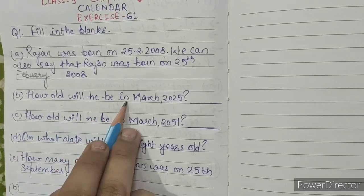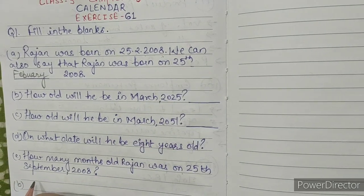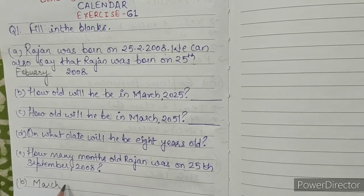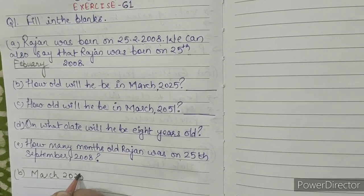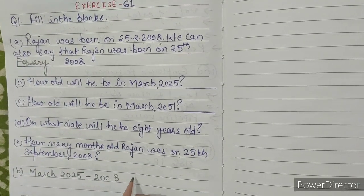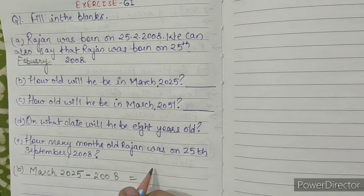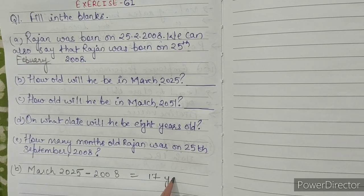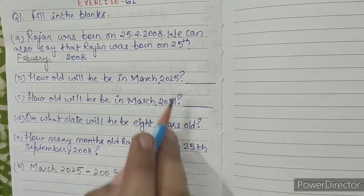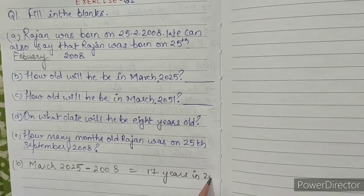How old will he be in March 2025? We calculate: 2025 minus 2008 equals 17. So he will be 17 years old in 2025.